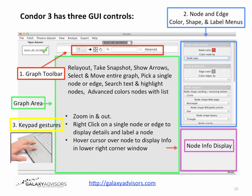Given that you have a graph you're mapping, Condor has three GUI controls available to explore it. The first is the graph toolbar, indicated in red above the graph — you can re-layout the graph, show arrows, pick a single node or edge, or grab and move the whole graph. On the right, indicated in blue, are the node and edge pick menus to change color, shape, or labels. Finally, indicated in yellow, is the keypad gesture: two fingers to zoom in or out, right-click on a node to show more details, and hovering your cursor over a node displays its information in the lower right corner. These three controls in combination give you a lot of variety for exploring your graph.